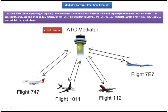If it is not there, then what this ATC mediator will do is it will send a message to the other flight pilots saying that flight 747 is going to land and they should not land their flight in that particular terminal. Then it will send a message to the flight 747 pilot saying that he can land his flight in the particular airport terminal.